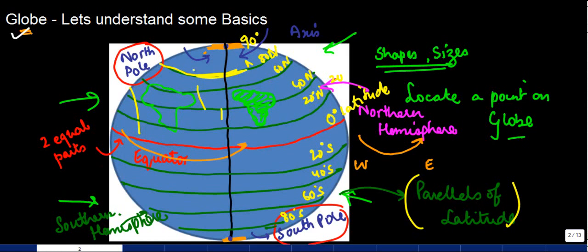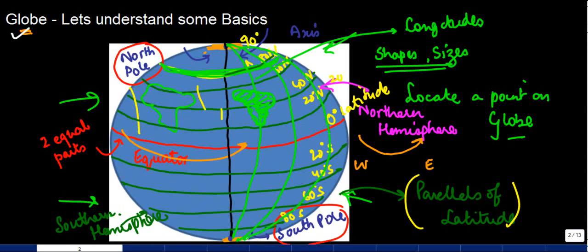Now once you know that a place lies on 80 degree north, it can again lie anywhere. To fix exactly where the place is located, we have another set of lines which run from north pole to the south pole, and these are known as longitudes. These run from the north pole to the south pole, and the advantage is they also have a degree of their own. So let's say if this is 30 degree longitude. If I tell you that a place lies on 80 degree north latitude and 30 degree longitude, then you can exactly pinpoint where exactly that line is.